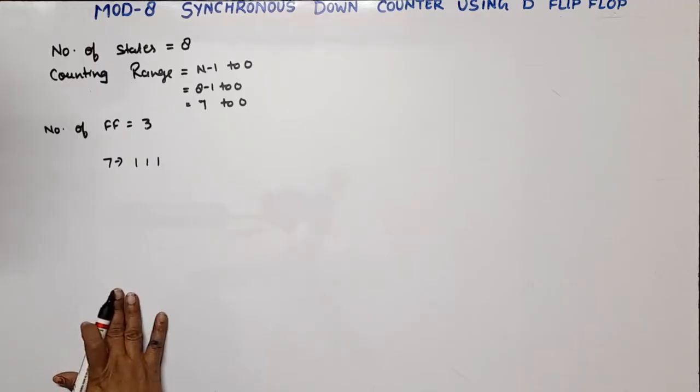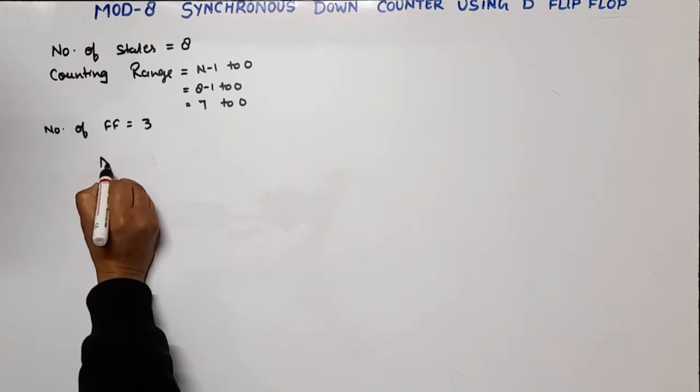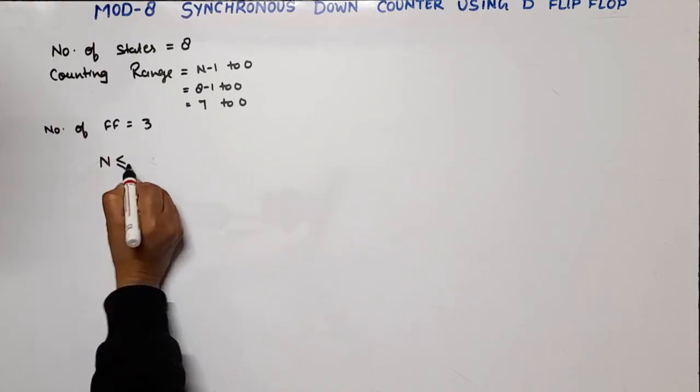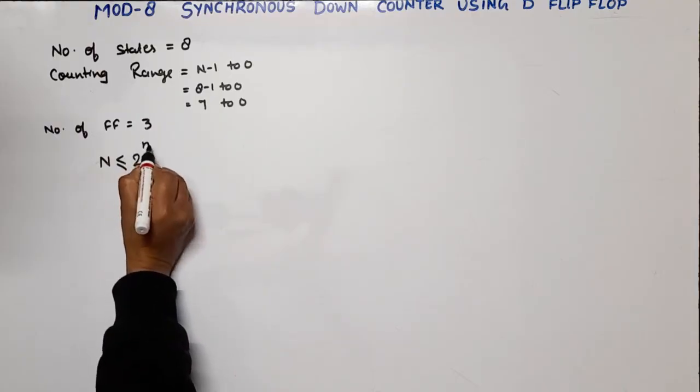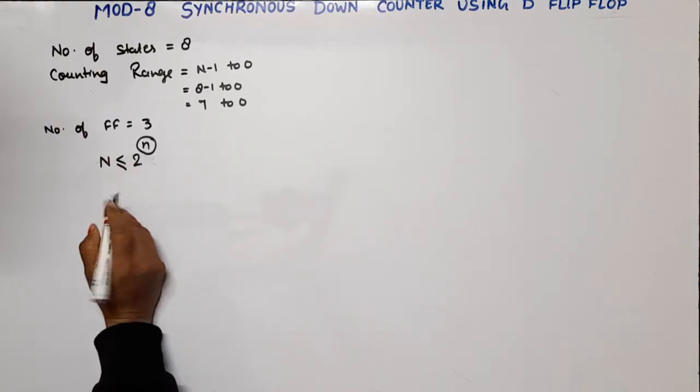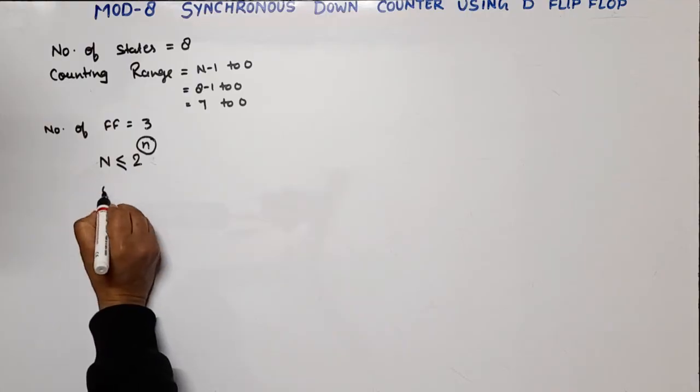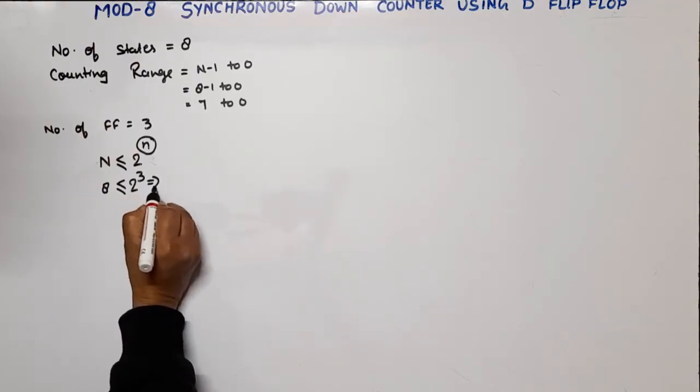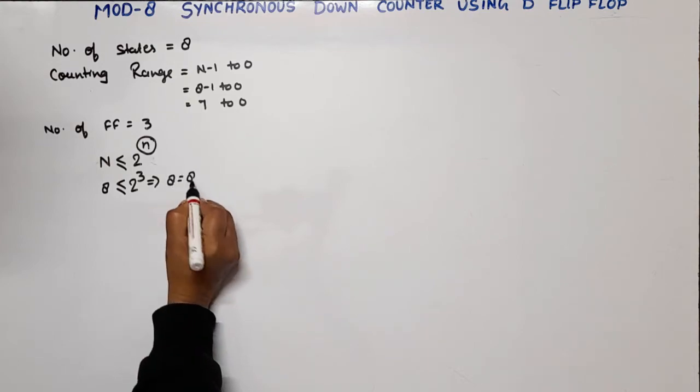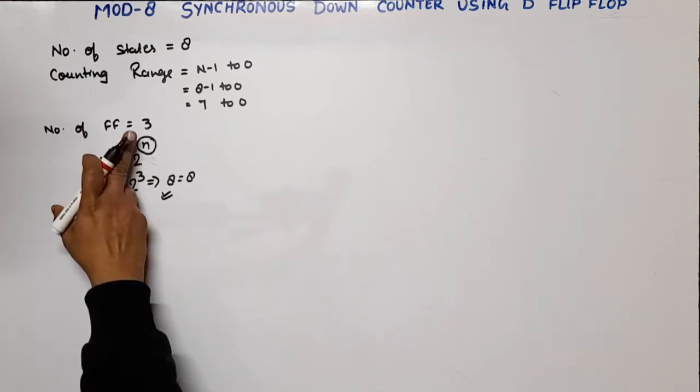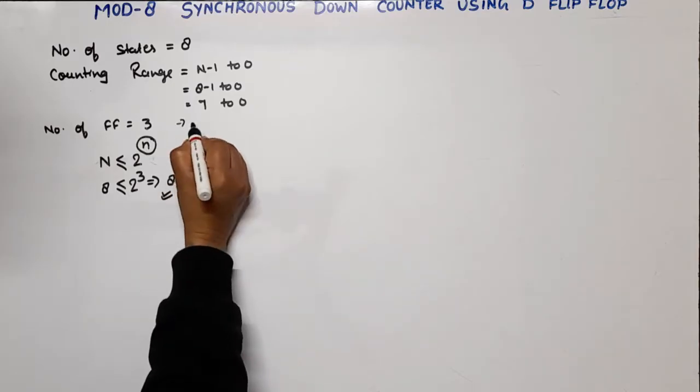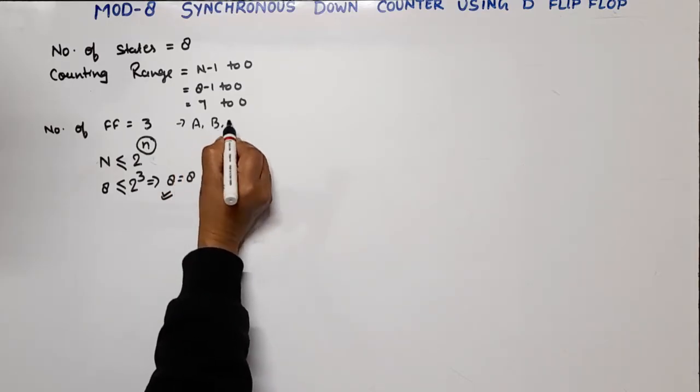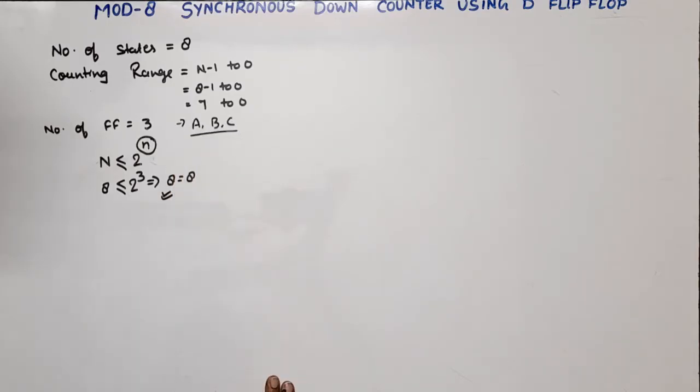The second method is that the number of states should be less than or equal to 2 raised to power n, where n is the number of flip-flops. Here, capital N is 8, less than equal to 2 raised to power 3. This will be 8 equals 8, means the condition is satisfied. So the number of flip-flops are 3.